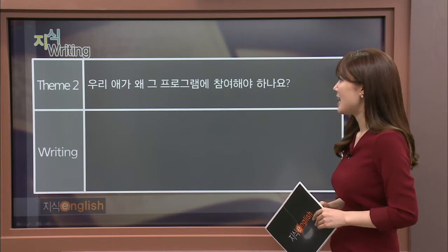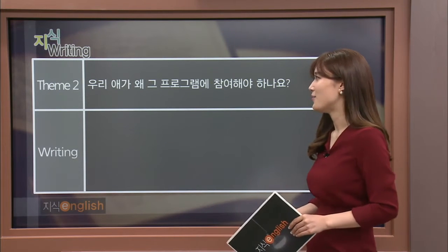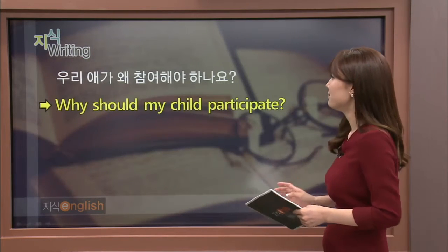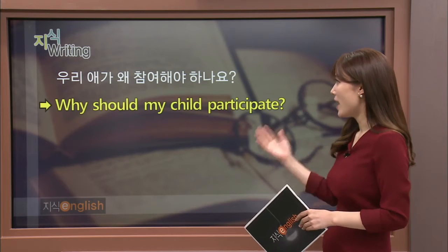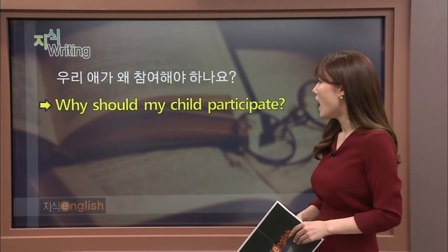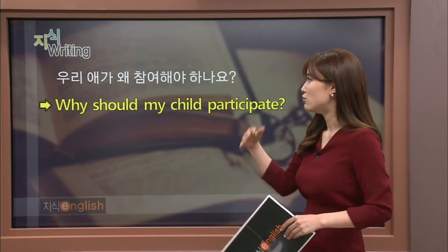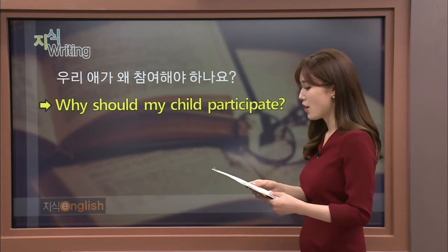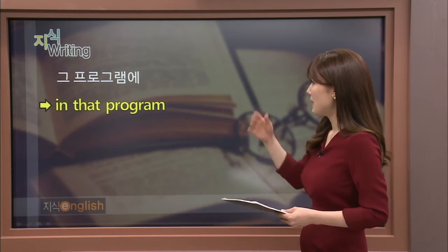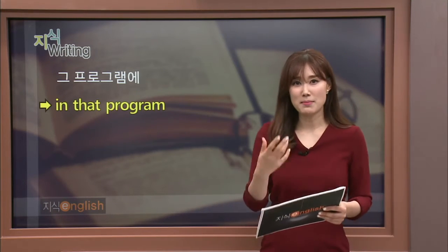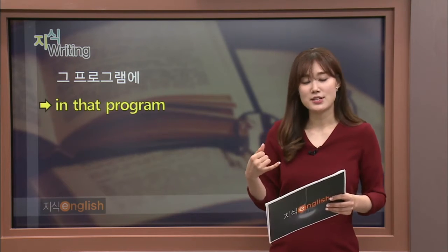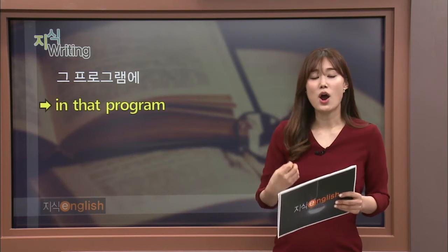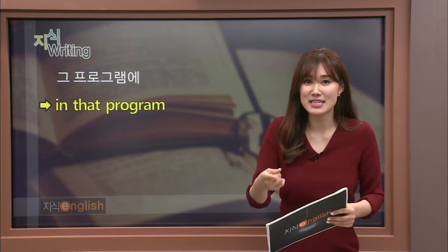The second sentence is: '우리 애가 왜 그 프로그램에 참여해야 하나요?' — This is the question parents asked the teacher who suggested putting students into the program. Since it's a 'why' question, start with 'why.' Then: 'Why should my child participate in that program?' — because the teacher already mentioned the program, so the parent responds using 'that program.'